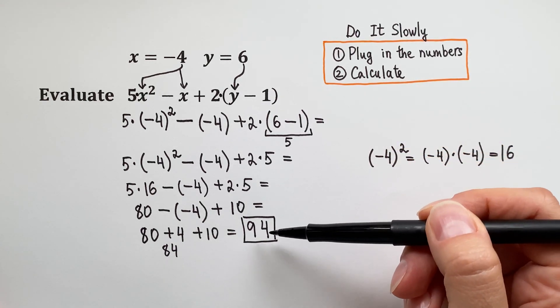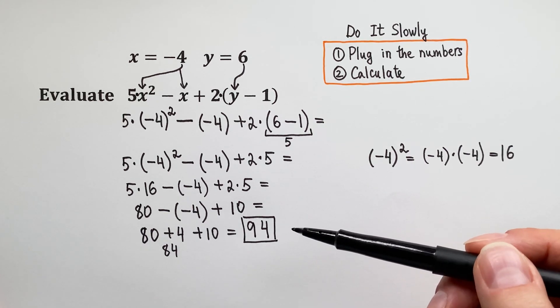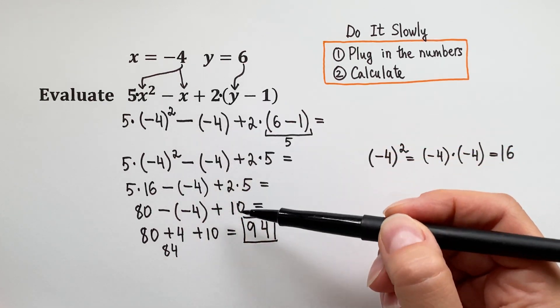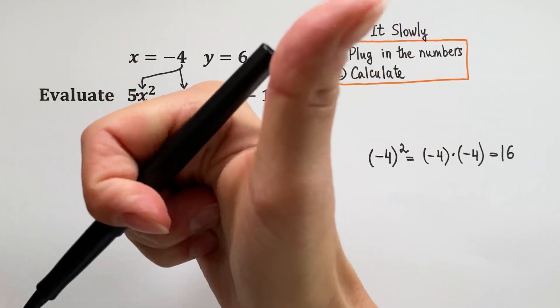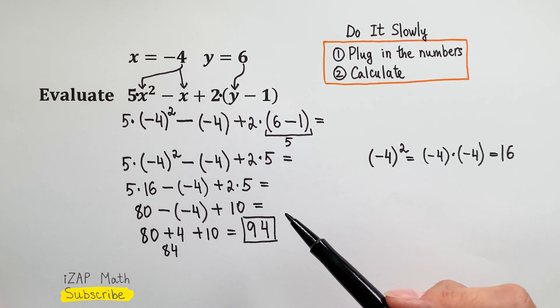Very good! Our algebraic expression became a number. So we plugged in the numbers and then we calculated, and then we got a number or a value at the end. So that's what it means to evaluate an algebraic expression. Plug in the numbers, calculate, get a value at the end. You did a good job today! And now be encouraged by the words of Apostle Paul: I can do all things through Christ who strengthens me, Philippians 4:13. Keep up your good work and I will see you next time!